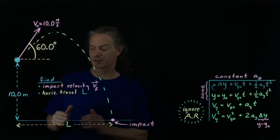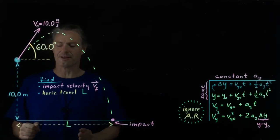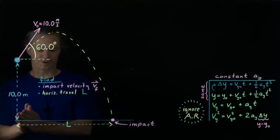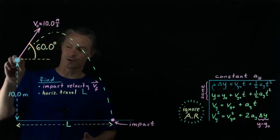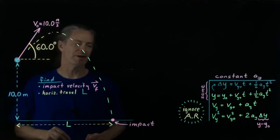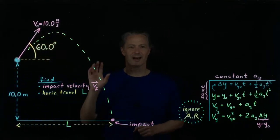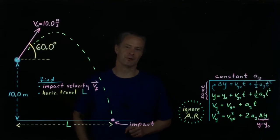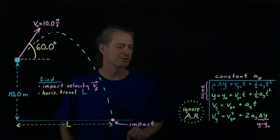We're also asked to figure out the horizontal travel — that is, how far does this projectile travel horizontally from the time shown here until the time of impact? Now, I've said idealized projectile motion problem because we're going to ignore air resistance.